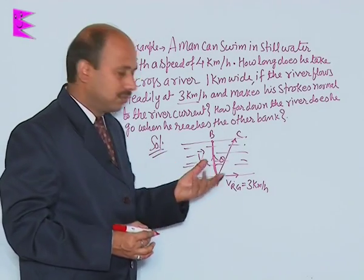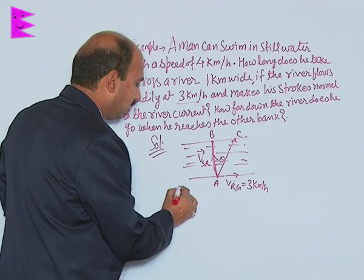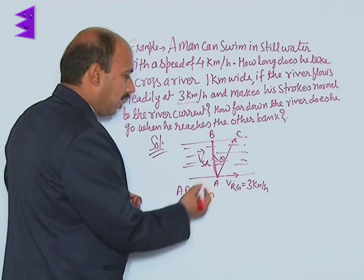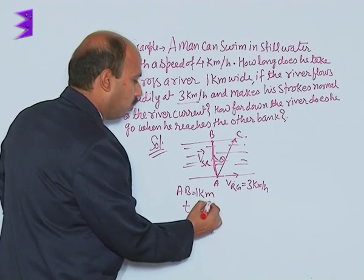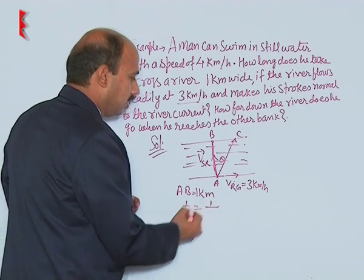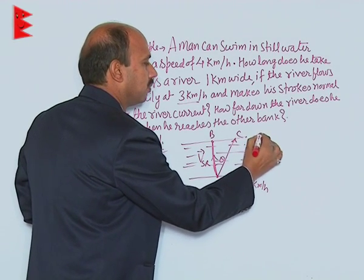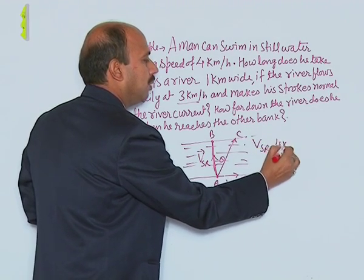We have to get first time. It is a simple one. We know AB, AB is equal to 1 kilometer and a speed is given to you. So time is equal to 1 divided by this Vsr. We know that is 4 kilometer per hour.